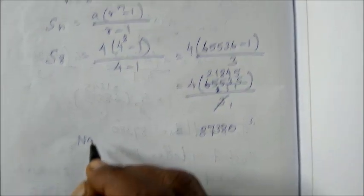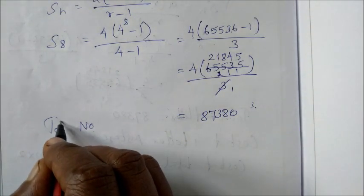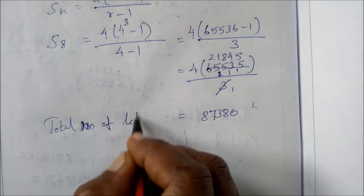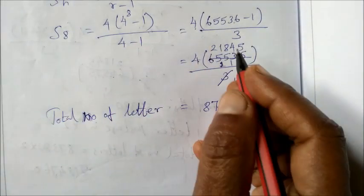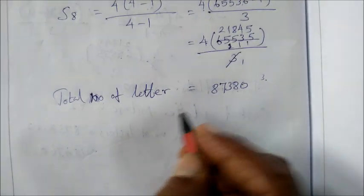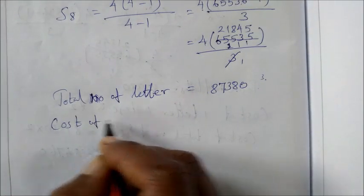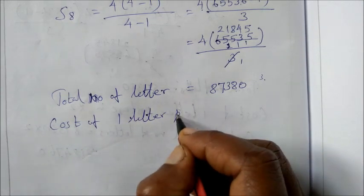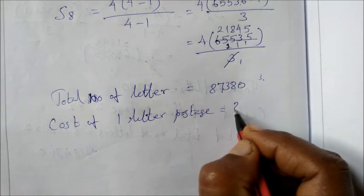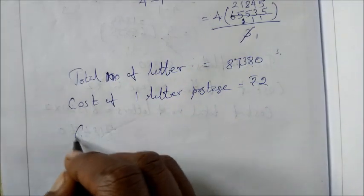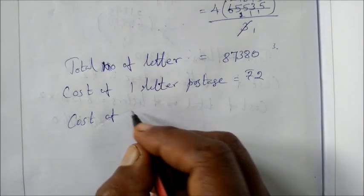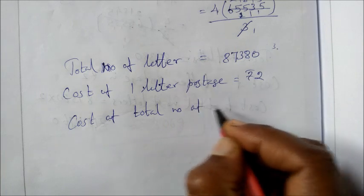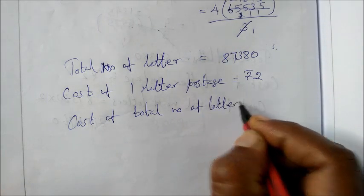So total number of letters is 87380. S8 is the set of letters, total number of letters. The cost of one letter postage is rupees 2. So cost of total number of letter postage needs to be calculated.